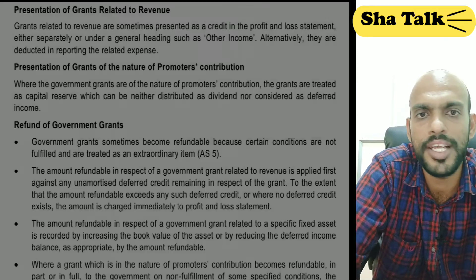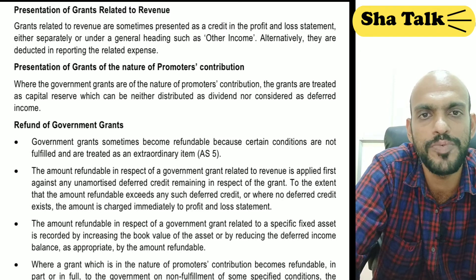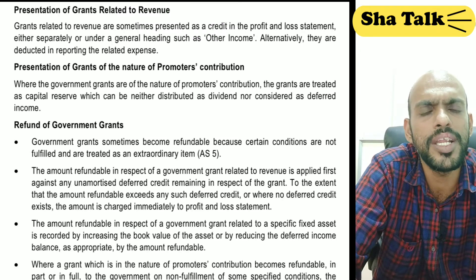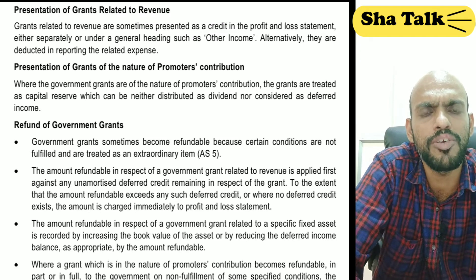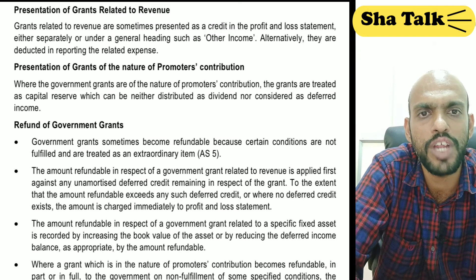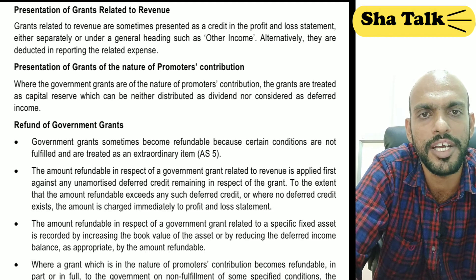Now let's look at an illustration. The next type is the revenue-related grant — grants that are given as revenue-nature grants.